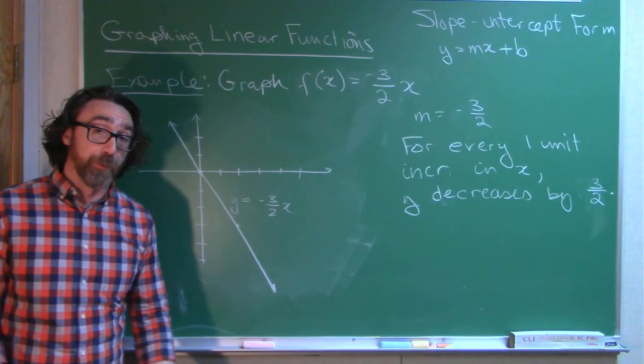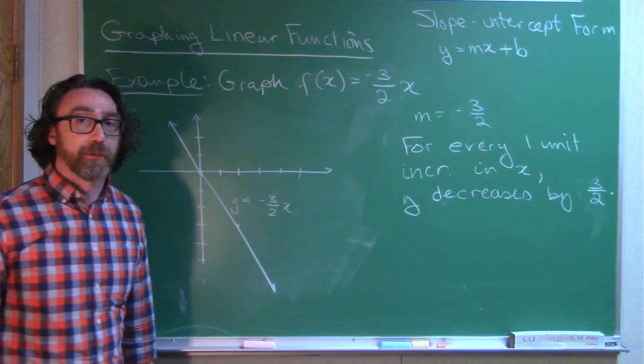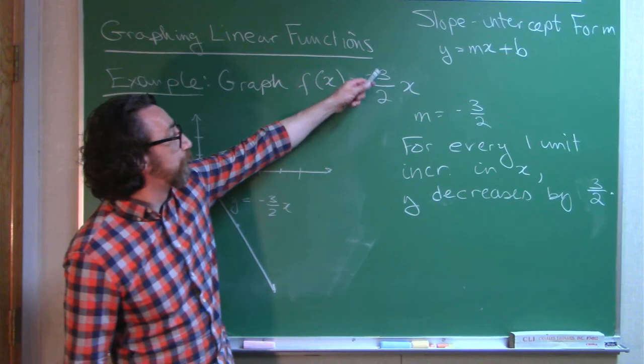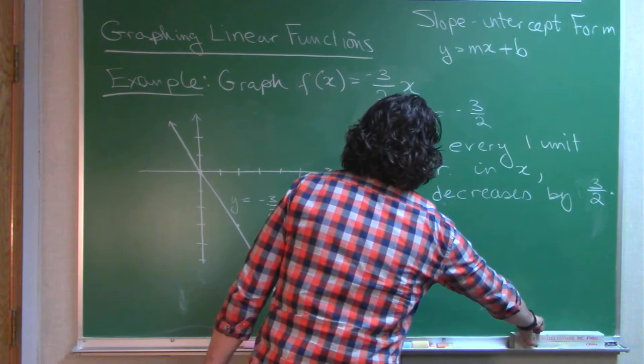So remember, positive slope, your graph is rising as you go left to right. Negative slope, your graph is dropping as you go left to right. And the slope tells you precisely how to do that.